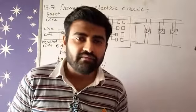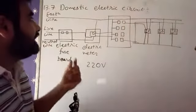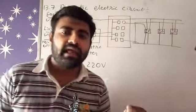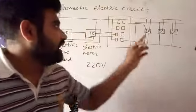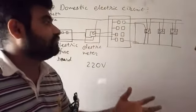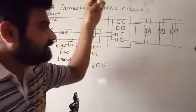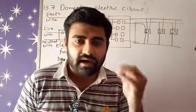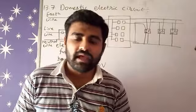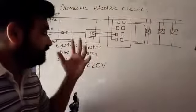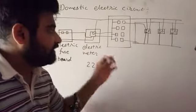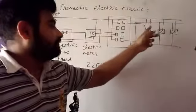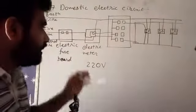The earth wire's purpose is whenever any device gets excessive amount of current, that wire just consumes that excessive current and puts it inside the earth surface so that device doesn't get harmed. All the appliances which we work with at higher voltages always have earthing wire. Earthing wire is very good for appliances.